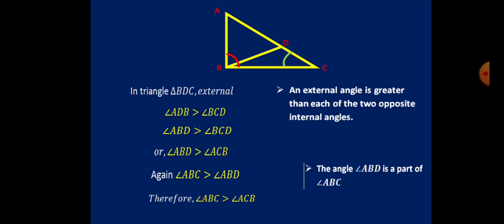We have AC as the greatest side, and the opposite angle is ABC. As shown in the proof, angle ABC is greater than any other angle in that triangle.